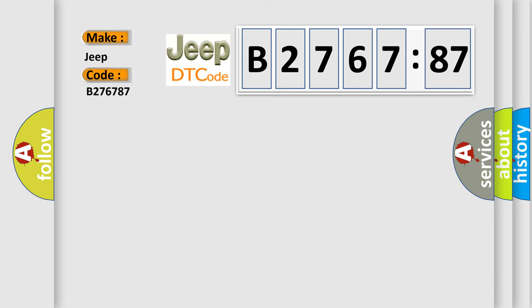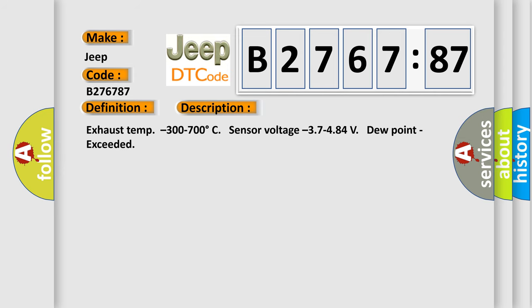So, what does the diagnostic trouble code B2767:87 interpret specifically for Jeep car manufacturers? The basic definition is exhaust heater return connection bank one sensor one.